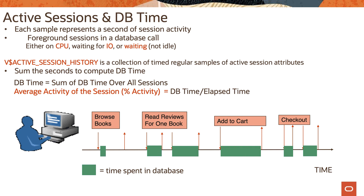In database time, each sample represents a second of session activity. Foreground sessions in a database call are either on CPU, waiting for IO, or waiting for non-idle waits. There is a view V$ACTIVE_SESSION_HISTORY which has a collection of timed regular samples of active session attributes. Sum the seconds to compute total database time. DB time is the sum of DB time over all the sessions.